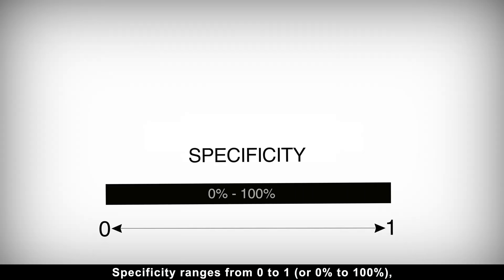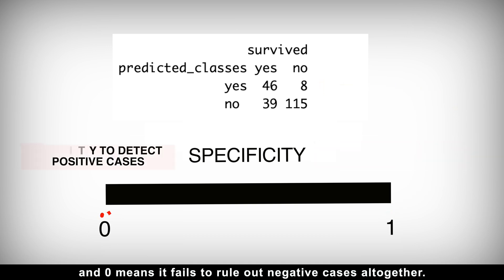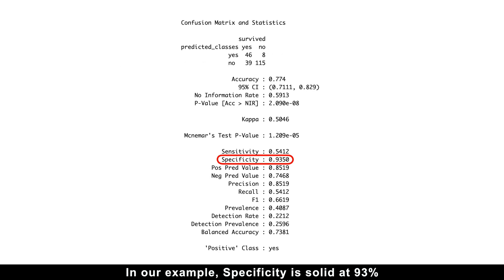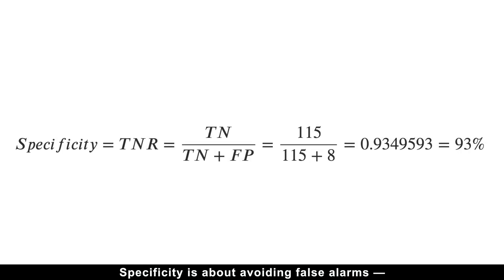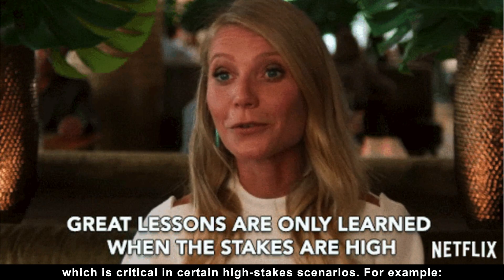Specificity ranges from 0 to 1, or 0% to 100%, where 1 indicates a perfect model with no false positives, and 0 means it fails to rule out negative cases altogether. In our example, specificity is solid at 93% because we only mislabeled 8 non-survivors as survivors. While sensitivity is about catching positives, specificity is about avoiding false alarms, which is critical in certain high-stakes scenarios.